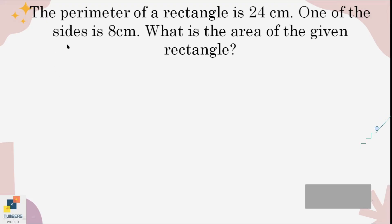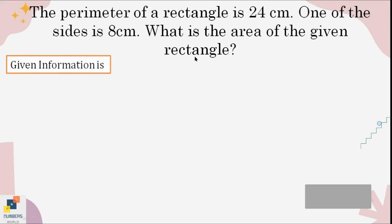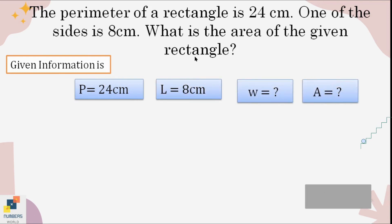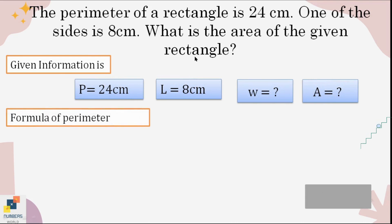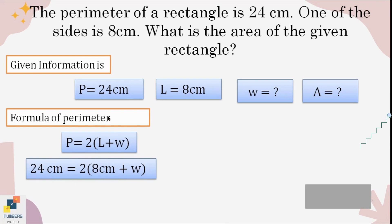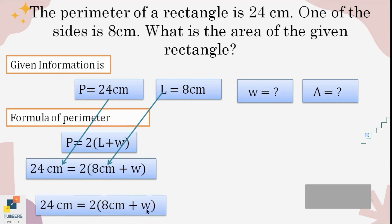Example two: the perimeter of a rectangle is 24 centimeters, one side is 8 centimeters — what is the area? Sorting out the given information: perimeter equals 24 cm, length is 8 cm, and we need to find the width and the area. We write the perimeter formula first, then substitute the known values: 24 cm in place of P and 8 cm in place of L.